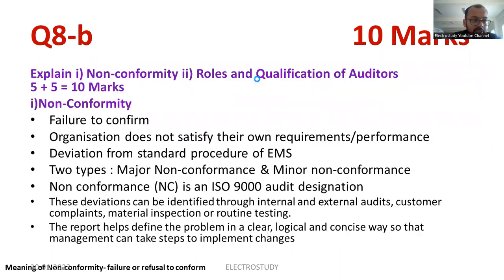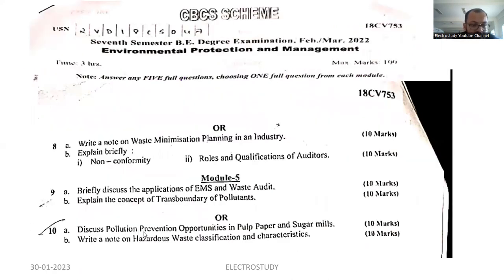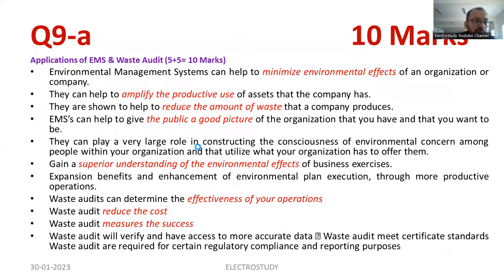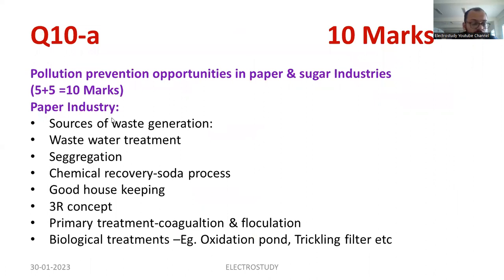Moving on to question number 10A. Discuss pollution prevention opportunities in pulp, paper, and sugar mills. If you explain the pollution prevention opportunity for the pulp and paper industry, you will get five marks, and if you focus on sugar mills, another five marks will be allocated. Initially I have explained the paper and pulp industry. You have to mention the various sources of waste generation — waste management, water treatment, wastewater treatment, how they segregate the waste, what about chemical recovery. For example, explain the soda process. If you have a chemical equation, try to add the soda process which you studied in chemistry.